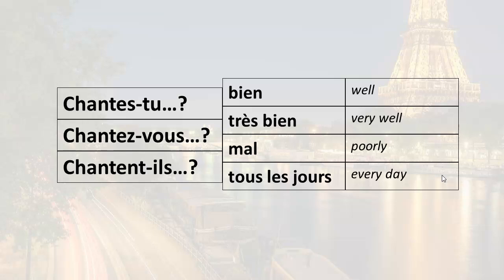And then finally, 'do they sing?' — Chantent-ils? 'Do they sing well?' — Chantent-ils bien? 'Do they sing very well?' — Chantent-ils très bien? 'Do they sing poorly?' — Chantent-ils mal? 'Do they sing every day?' — Chantent-ils tous les jours?